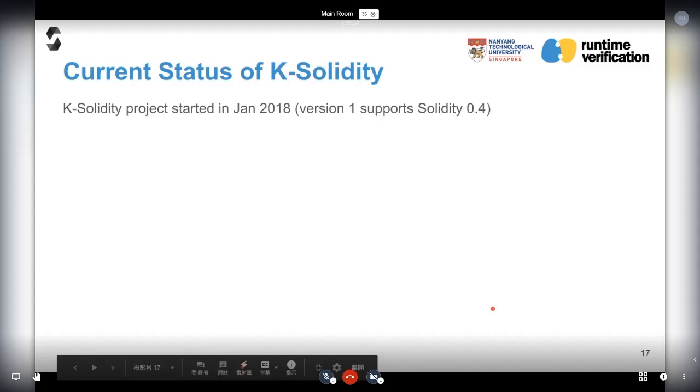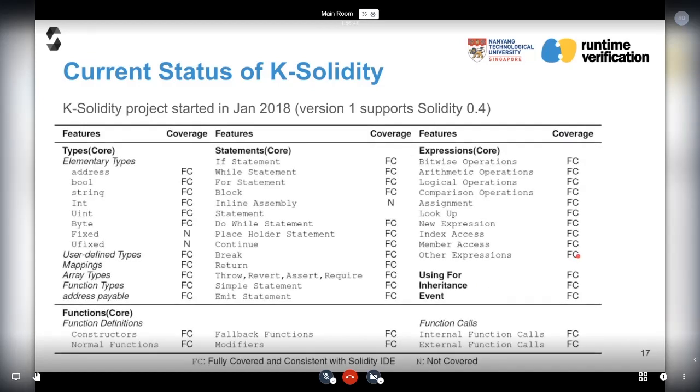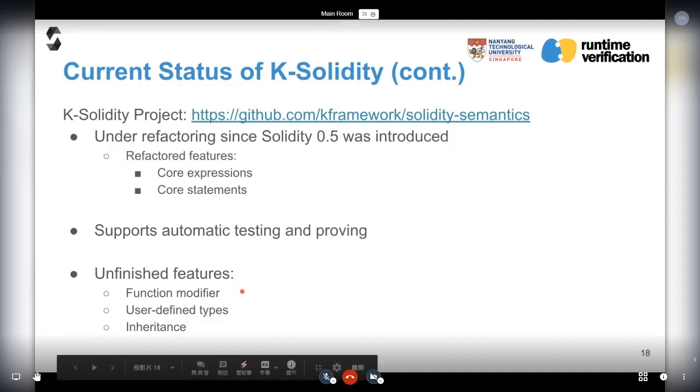The current status of K-Solidity: the project started in the beginning of 2018. Until now, we have two versions. Version one supports Solidity 0.4. This table summarizes the features supported by our semantics. As you can see, almost every core feature is supported except those we are not able to support, for example inline assembly, which is EVM bytecode and obviously out of the scope of Solidity itself. Since Solidity 0.5 was introduced, we plan to have a refactoring to version 2. Currently we have finished core expressions and statements. We are still working on some advanced features - function modifiers, user-defined types, inheritance, etc. You can find our version 2 implementation on GitHub now.